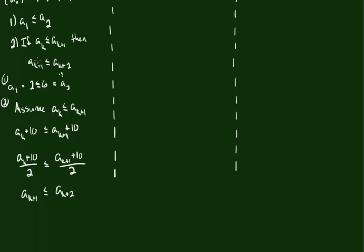So if we start off by assuming that a_k is less than or equal to a_{k+1}, we are forced to conclude that a_{k+1} is less than or equal to a_{k+2}. So this is going to, in sort of a chain reaction, give us the proof that a_1 ≤ a_2 ≤ a_3 ≤ ... and so on and so forth. So there's the first part of our proof.